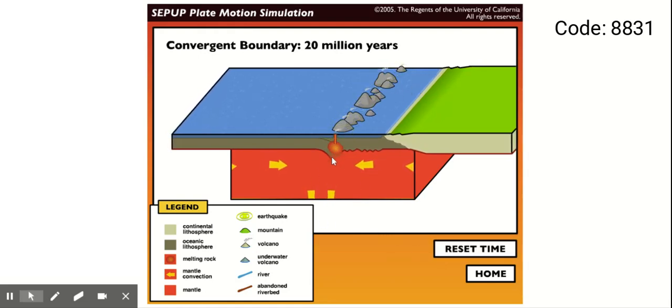What we have here is one plate subducting under another. We've got a little bit of folding going on here because of the collision, which makes sense, but not too much. And then you've got these islands with volcanoes on them.